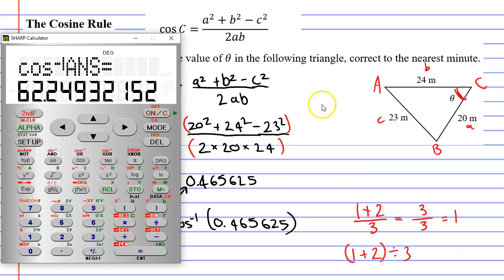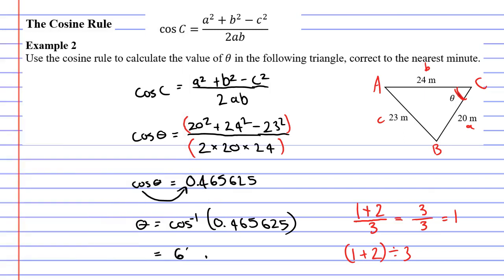They want it to the nearest minute. So I'm going to go second function DMS. And this is a good question because it involves rounding. 62 degrees and it's not 14 minutes. Look at your seconds. My seconds are almost 60 seconds. They're more than 30 seconds. So I've got to round my minutes up to 15 minutes. So we'll say 62 degrees, 15 minutes.